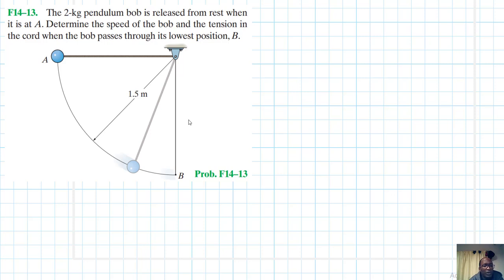Hello, I welcome you all. The problem reads that the 2 kg pendulum bob is released from rest when it is at A. Determine the speed of the bob and the tension in the cord when the bob passes through its lowest position B. So the question here is to find the speed of the bob and the tension in the cord when the bob passes through its lowest position B. This problem is coming from the dynamics engineering mechanics 14th edition by RC Hibbeler.